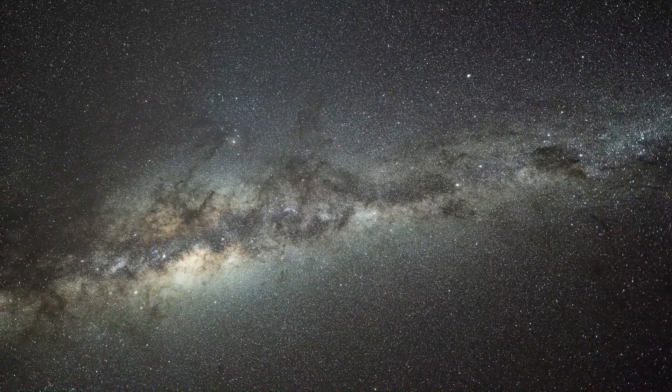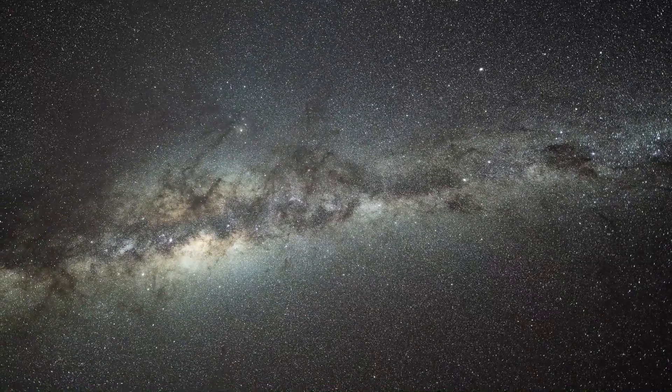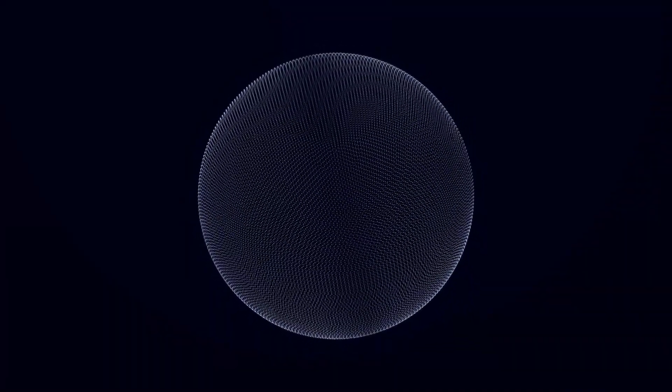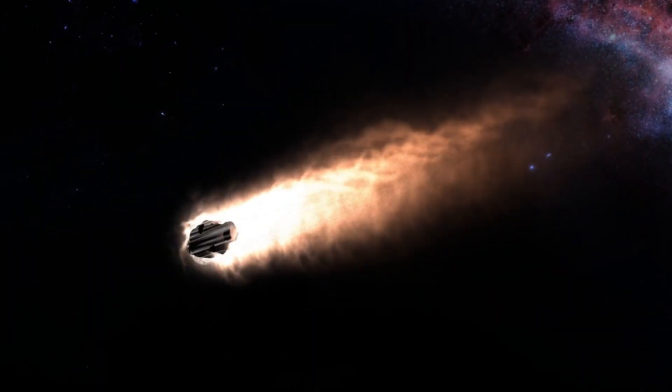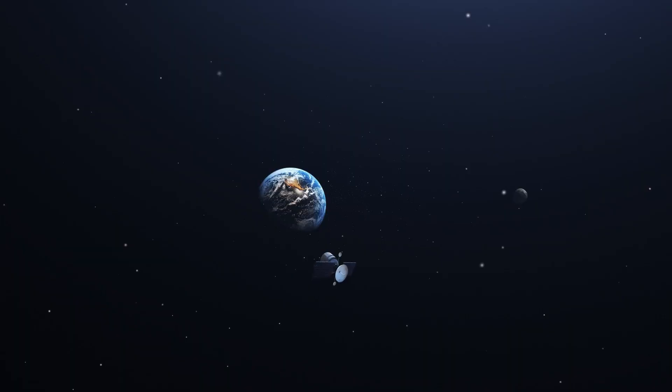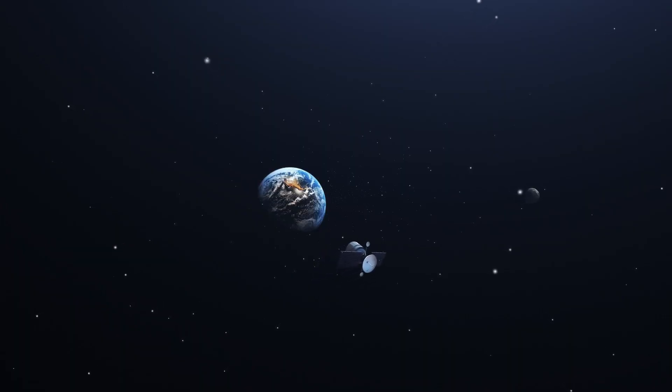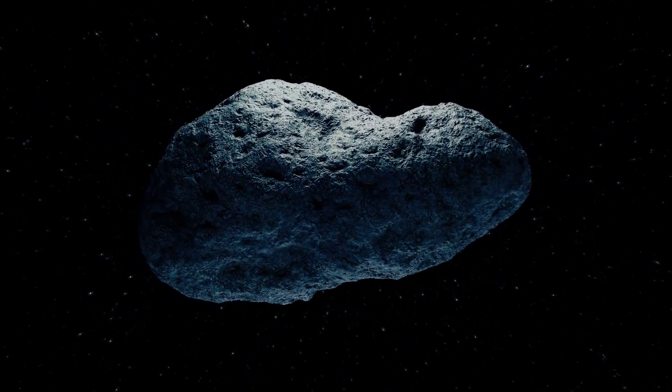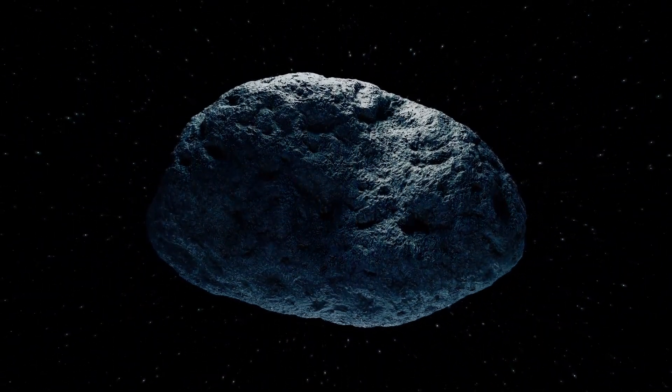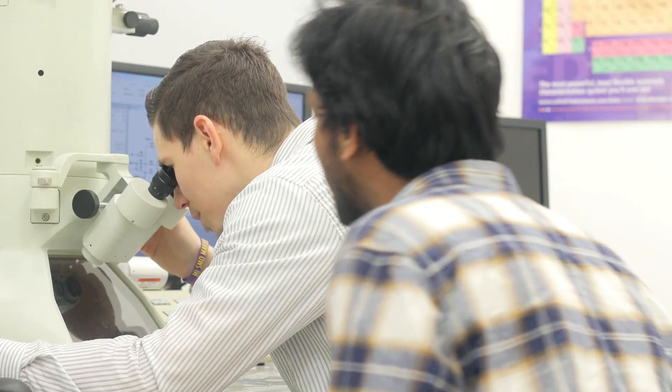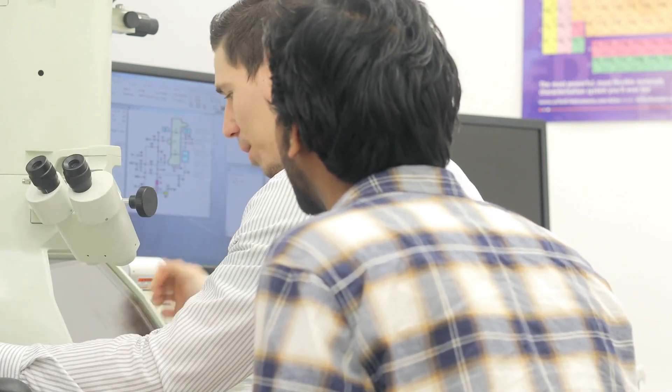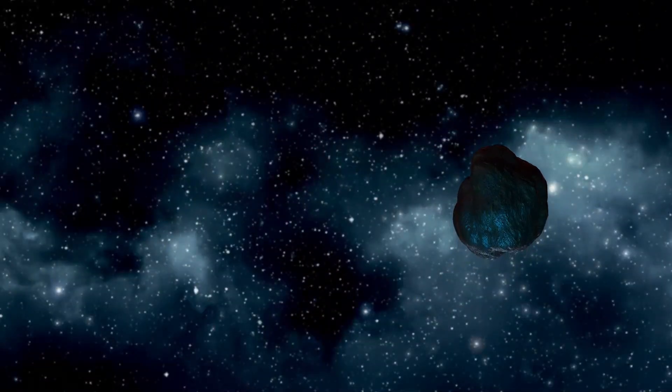This region is essentially a gravitational dead zone, a quiet neighborhood of space where objects should remain relatively undisturbed. There's simply no known natural mechanism that could have accelerated Oumuamua to the velocity needed to escape its home system and travel to ours. It's as if Oumuamua was placed in this quiet region deliberately, where its launch would attract minimal attention, waiting to drift through space until it reached our solar system.